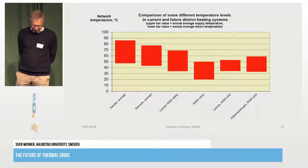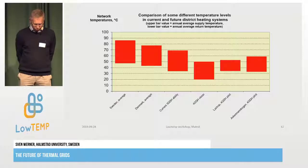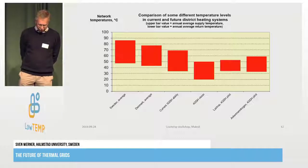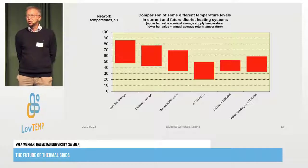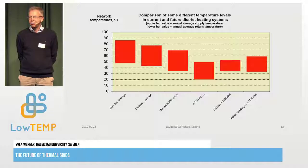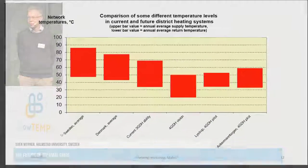We can see the different possibilities here. The current technology we call third generation has the ability to use lower temperatures than we actually use in Sweden. So why is there a difference between real systems and theoretical systems? Because we have lots of malfunctions in our systems that we haven't bothered about before because they were not expensive. But in the future these malfunctions become about five times more expensive if you have low temperature sources. So you really have a driving force to eliminate all malfunctions in existing systems.